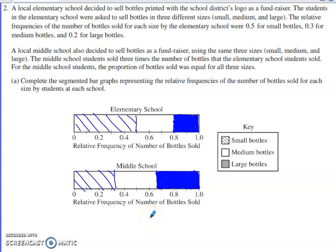For the middle school, we have a proportion of 0.33 for each of the bottle sizes, so I'm marking my first divider at 0.33, then going up to 0.66 or 0.67, and then from 0.67 the rest of the way to 1.